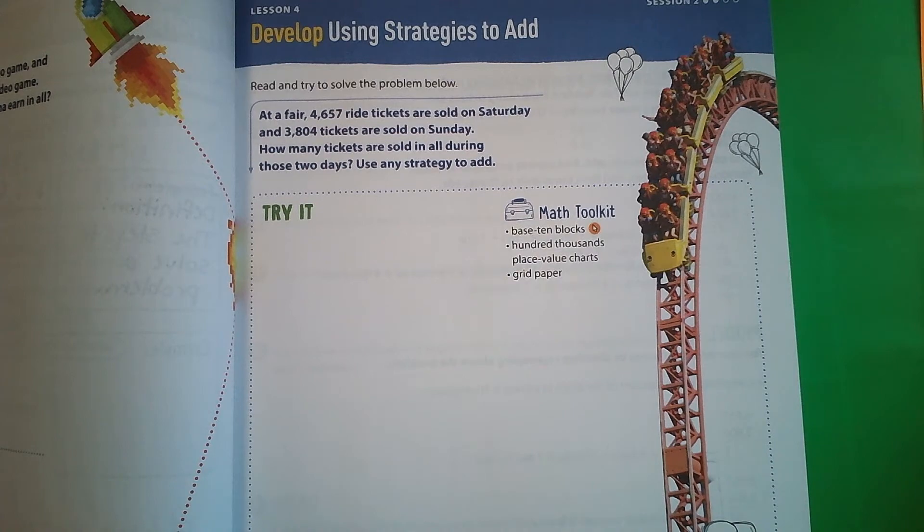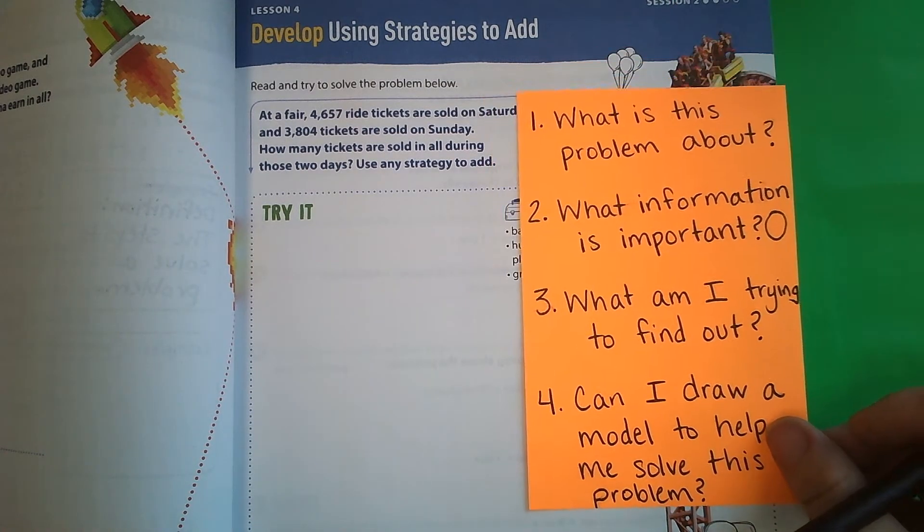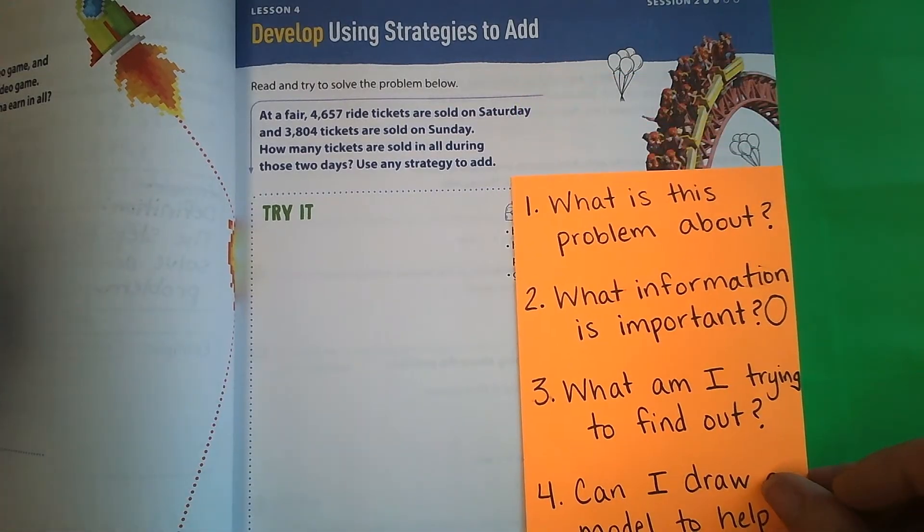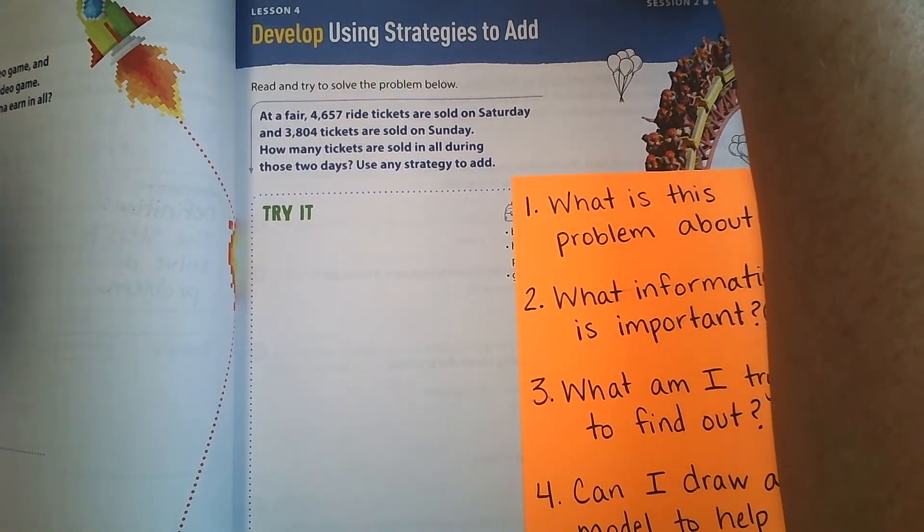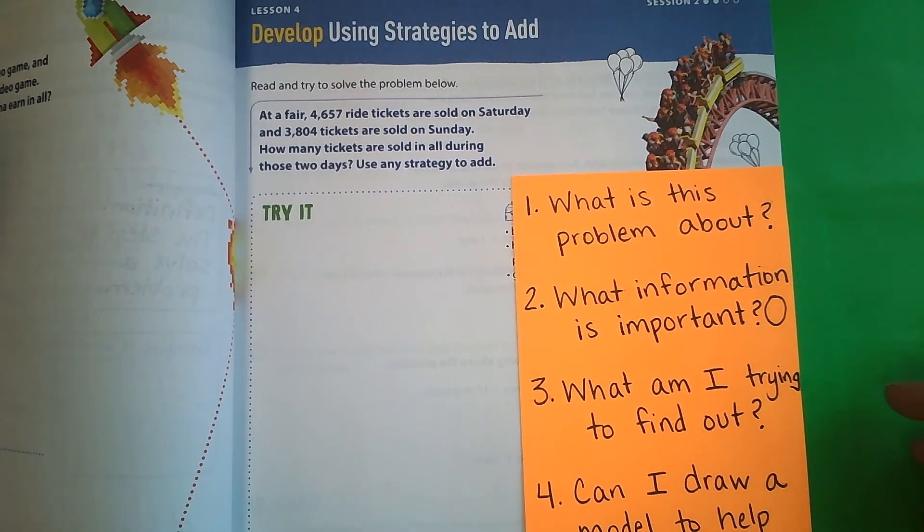So again, we are going to use our card here to help us solve our word problem. We are on page 53 in our math book. At a fair, 4,657 ride tickets are sold on Saturday, and 3,804 tickets are sold on Sunday. How many tickets are sold in all during those two days? Use any strategy to add.